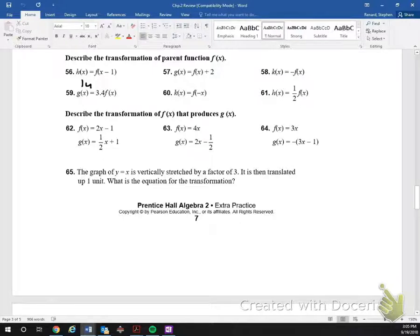Because the negative 1 is inside the parentheses, as opposed to if you look at number 57, that plus 2 is outside of the parentheses, that negative 1 is going to move it one unit to the right. I know that seems counterintuitive, that if it's a negative 1, it should move it to the left. But look at what you have to do to get a zero point. You have to add 1 in there. One unit to the right.